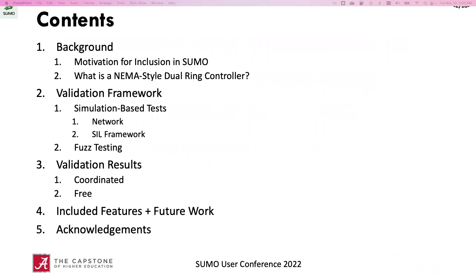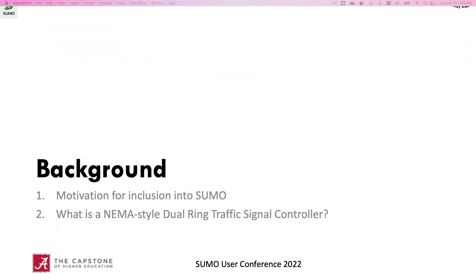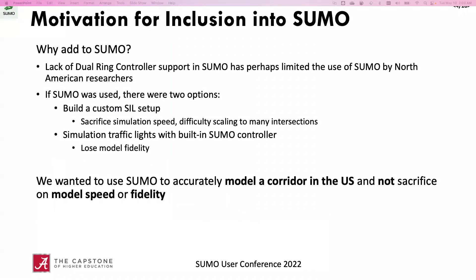I'm going to talk about what the motivation for including a dual ring controller into SUMO is, what is a NEMA-style dual ring controller, and then we'll touch on the validation framework that we used, including simulation-based tests and fuzz testing, and then we'll go into our validation results. And finally, just a brief overview of the features that we added and the future work we see, as well as the acknowledgments.